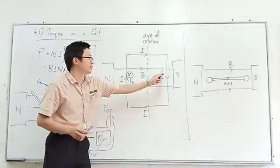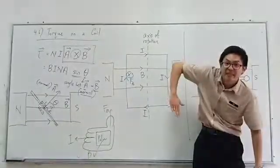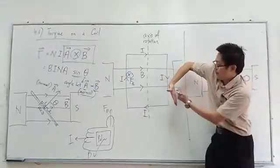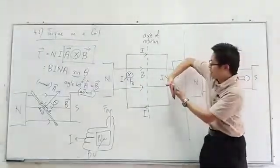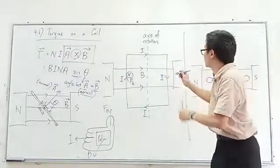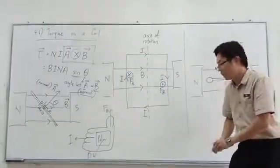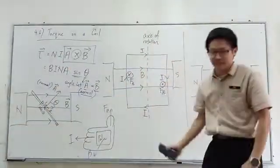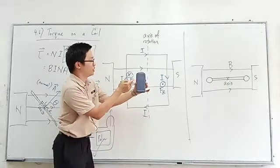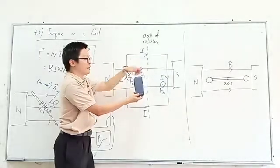How about the right-hand side? Current goes down. Use your hand — current going down, magnetic field to the right, so the thumb points out of the page. The magnetic force here is out of the page. So one side is pushed inward and the other side is pushed outward, causing the coil to rotate.